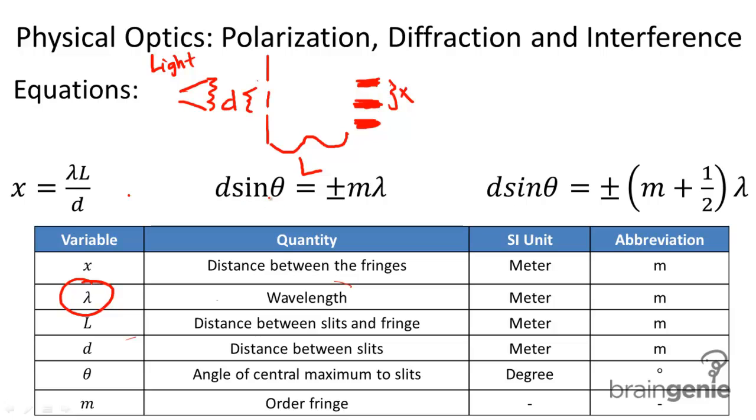The next equation: D sine theta equals M times the wavelength. M is the order of the fringe. We have many different fringes. That's the central fringe. We call this the central maximum. The central maximum is the brightest portion. It's the very center of this interference pattern. That's the first band of light.